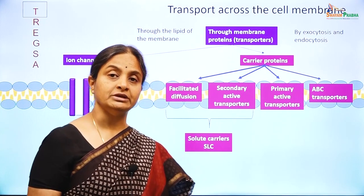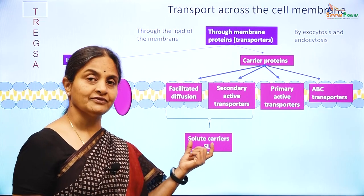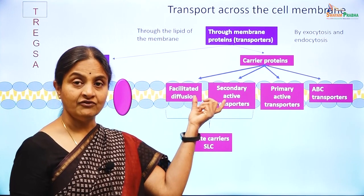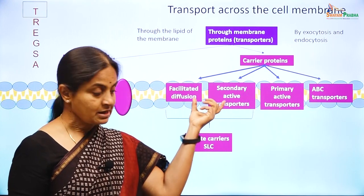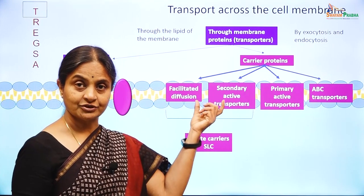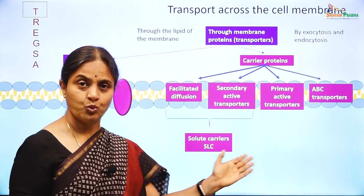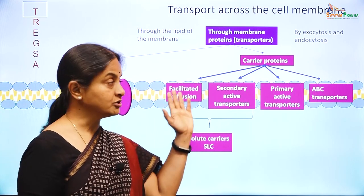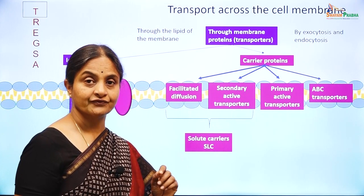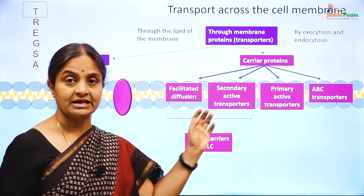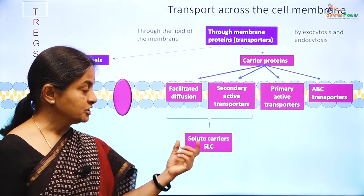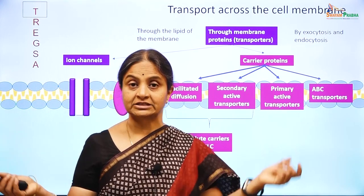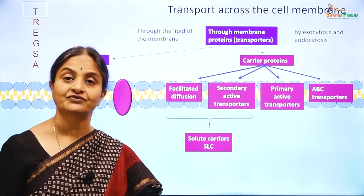At this juncture it is important to learn a relatively newer terminology called solute carriers. This term is reserved for both facilitated diffusion and secondary active transport classes of transporters. The genes responsible for synthesizing these transporters are named SLC1, SLC2, etc., falling into 52 families with 400 odd transporters. The term should not be used for primary active transporters or ion channels.